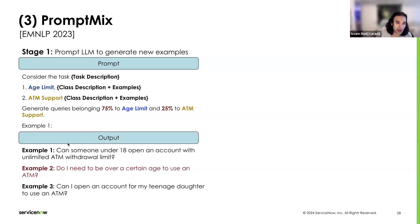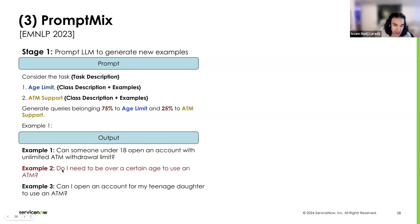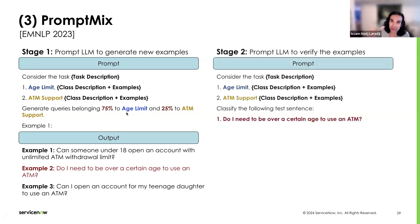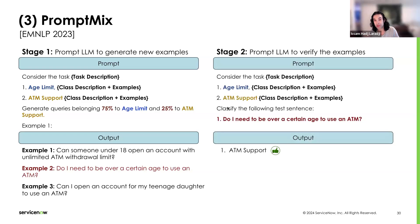With this approach we can get examples like: 'Can someone under 18 open an account with unlimited ATM withdrawal limit?' — which, even though it contains both 'age' and 'ATM', still belongs to age limit. Another example, 'Do I need to be over a certain age to use an ATM?', contains both terms but actually belongs to ATM support. To resolve such ambiguity, we can prompt the LLM a second time, providing the class descriptions for both age limit and ATM support, and ask it to reclassify each generated example. This allows it to correctly assign the example to ATM support instead of the originally intended age limit class.